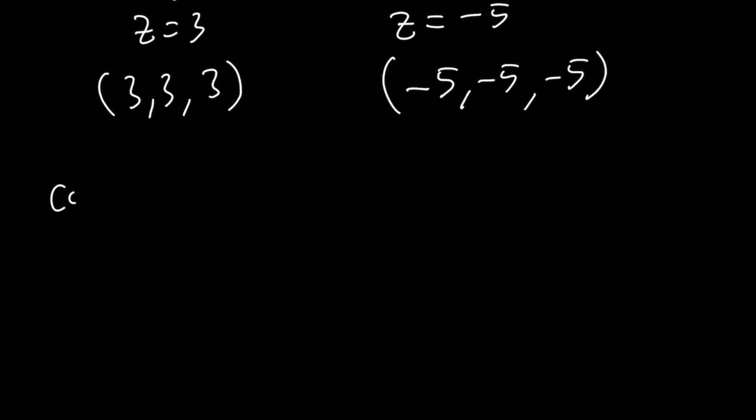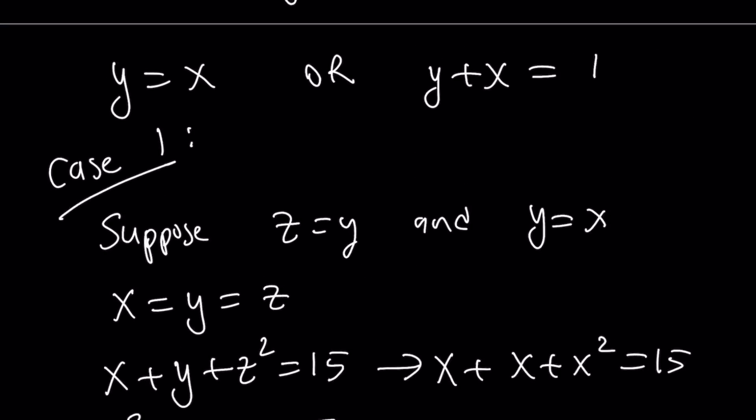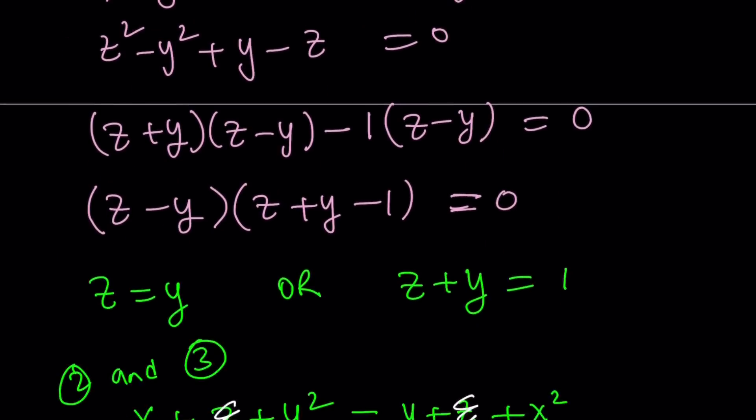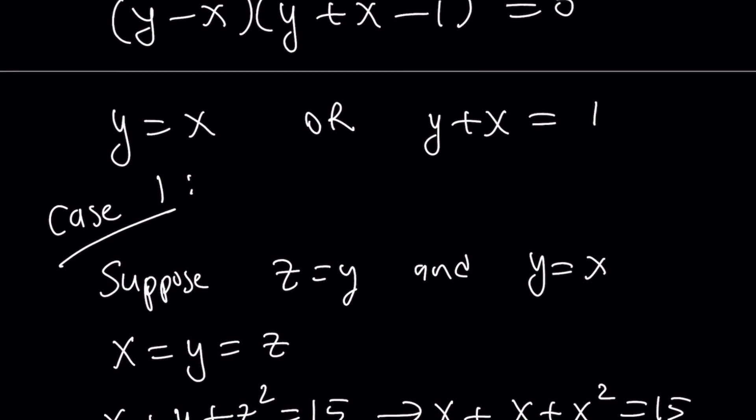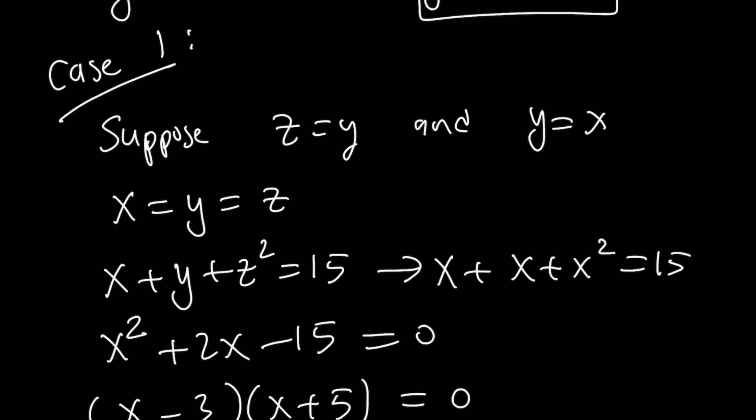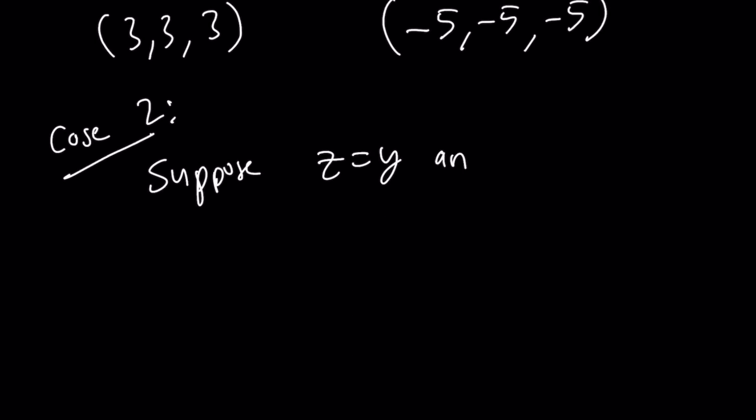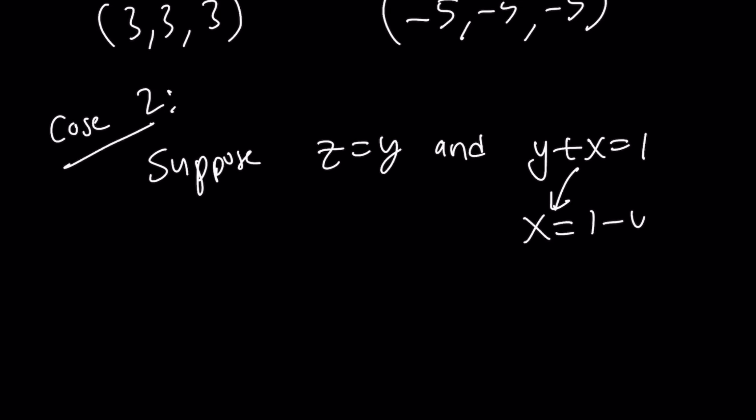So case 2 is going to be looking at it from a different angle. Now we're going to consider, yes, I'm okay with z being equal to y. So it's kind of like taking the first one from one and two like this. I'm going to take this. I want to take this. But I don't want to go with y equals x, but I want to go with this one now. So kind of like a crisscrossing. So I'm going to suppose z equals y and, this is an and by the way, y plus x equals one. So let's see how that plays out. So this is kind of nice because now z is equal to y, so I can replace z with y. And I can also replace x with 1 minus y. So now everything can be written in terms of y.